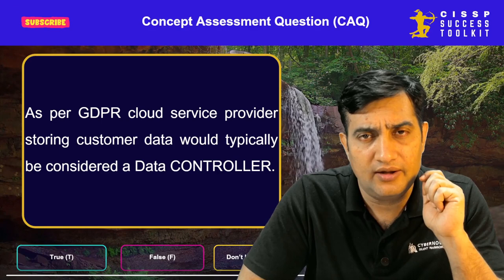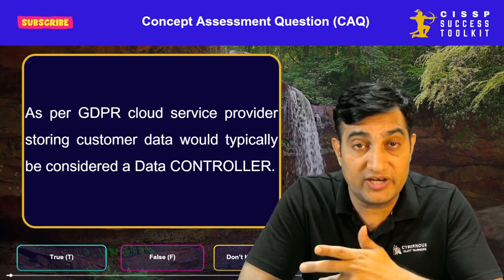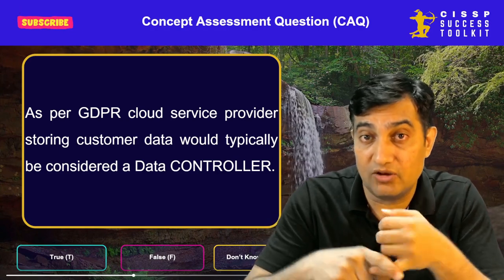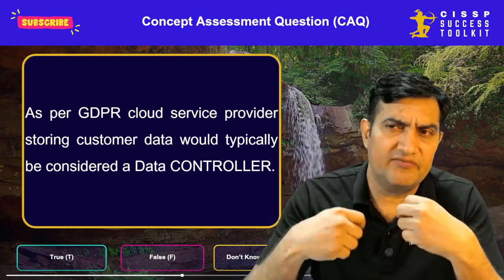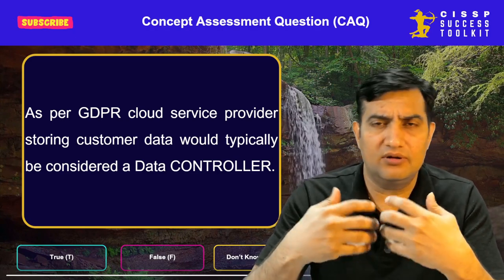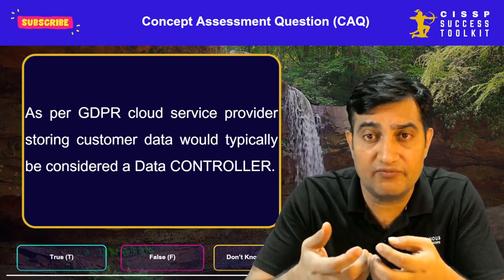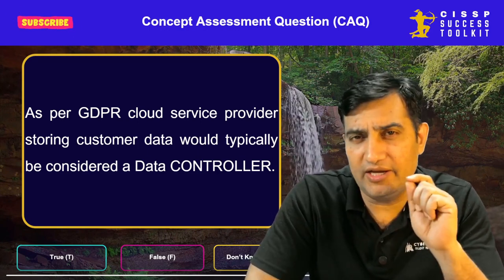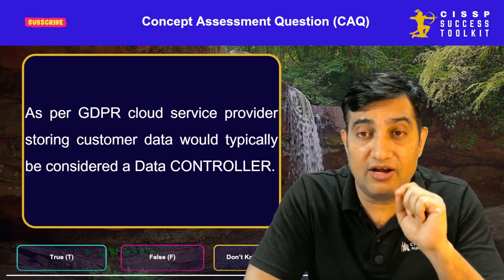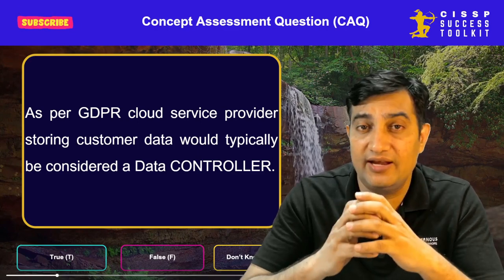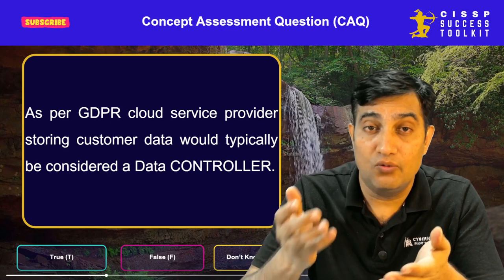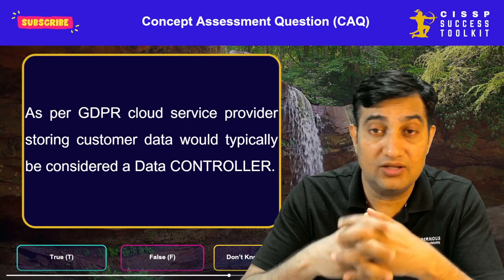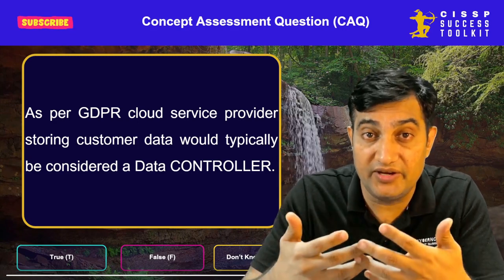The data controller is also responsible for handling data subject requests directly — for example, when someone is trying to access their personal information, requesting an amendment, or requesting erasure of data. And in the case of a breach, the data controller is responsible for notifying the supervisory authorities within 72 hours of the possible breach. Otherwise, the fines are very, very heavy.